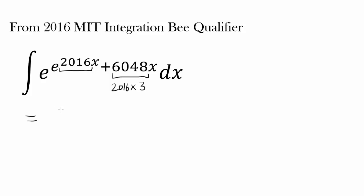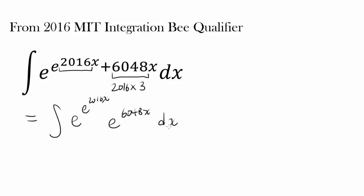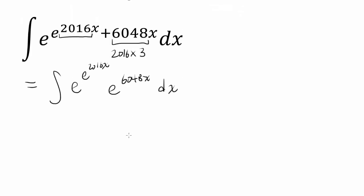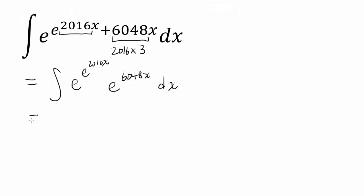So let's start by breaking this apart to e to the e to the 2016x, times e to the 6048x. I'm just breaking apart this plus by using two exponential forms, and we have dx. And as we mentioned, we know 6048 is 2016 times 3, so let's utilize that. So we have e to the 2016x cubed, dx.